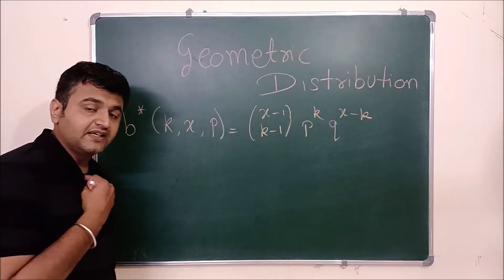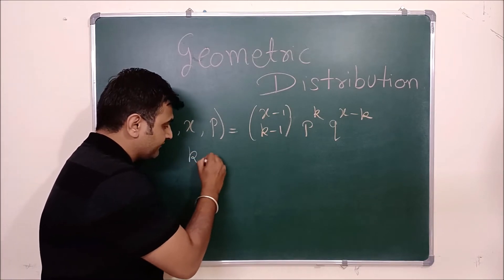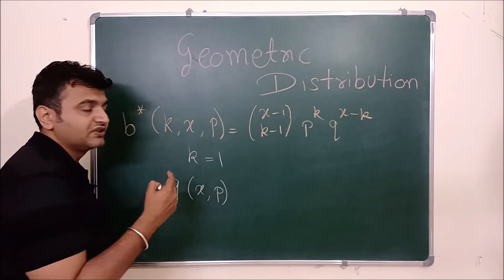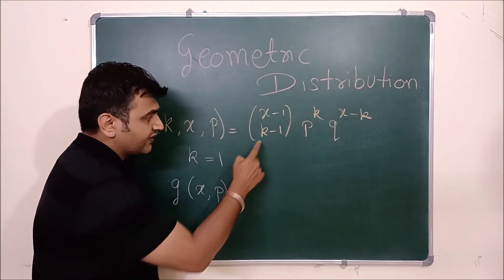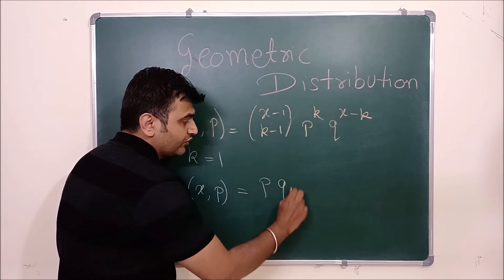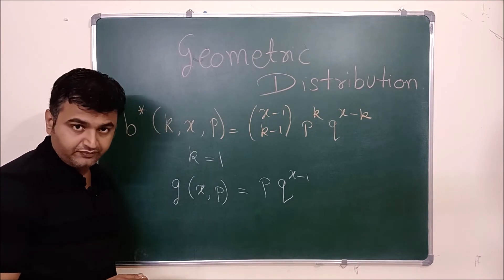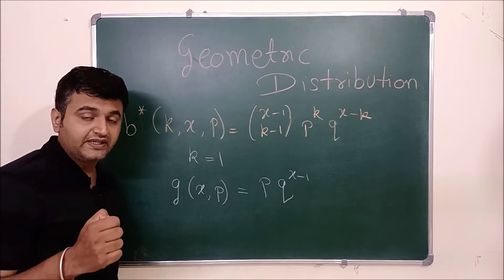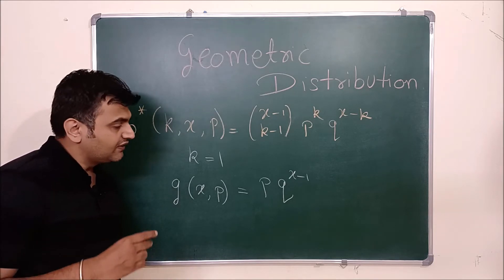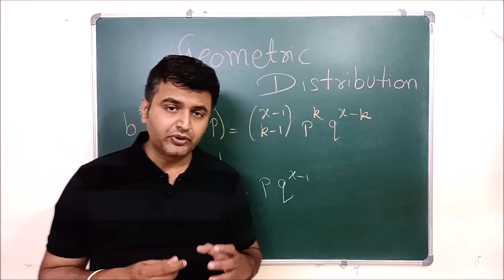Geometric distribution is a special case of negative binomial distribution - that means when your k is one. When k equals one, the negative binomial distribution is called a geometric distribution. When k is one, x minus one choose zero equals one, so the formula reduces to p times q raised to x minus one. This is the geometric distribution: the probability that the first success occurs at the xth trial.